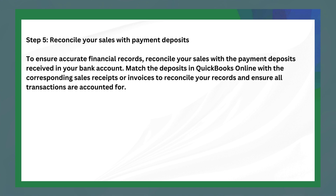To ensure accurate financial records, reconcile your sales with the payment deposits received in your bank account. Match the deposits in Cookbooks Online with the corresponding sales receipts or invoices to reconcile your records and ensure all transactions are accounted for. That's how you do it — thanks for watching and I'll see you in the next video very soon. Peace!